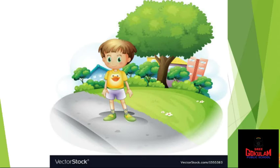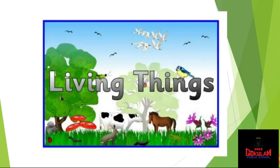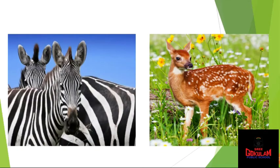There are many things in the environment. We can classify them into living things and non-living things. The things that live are called living things — they grow, they have their food, they breathe in gases. Now, can you see these animals in the picture?